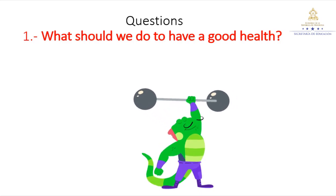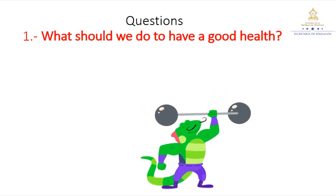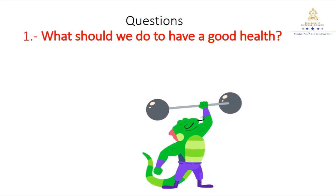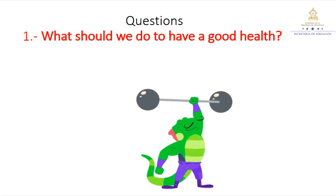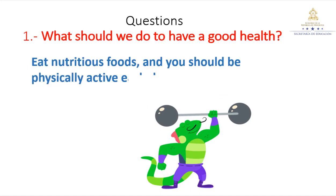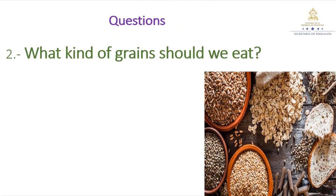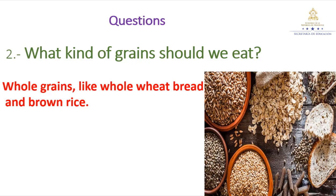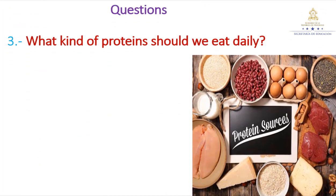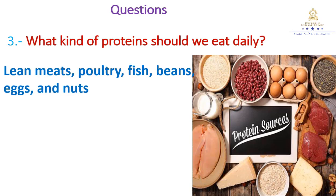Now let's answer some questions about the reading. Question one: What should we do to have good health? That's right — eat nutritious food and be physically active each day. Question two: What kind of grains should we eat? That's right — whole grains like whole wheat bread and brown rice. Question three: What kind of proteins should we eat daily? That's right — lean meats, poultry, fish, beans, eggs, and nuts. Well done guys, good work.